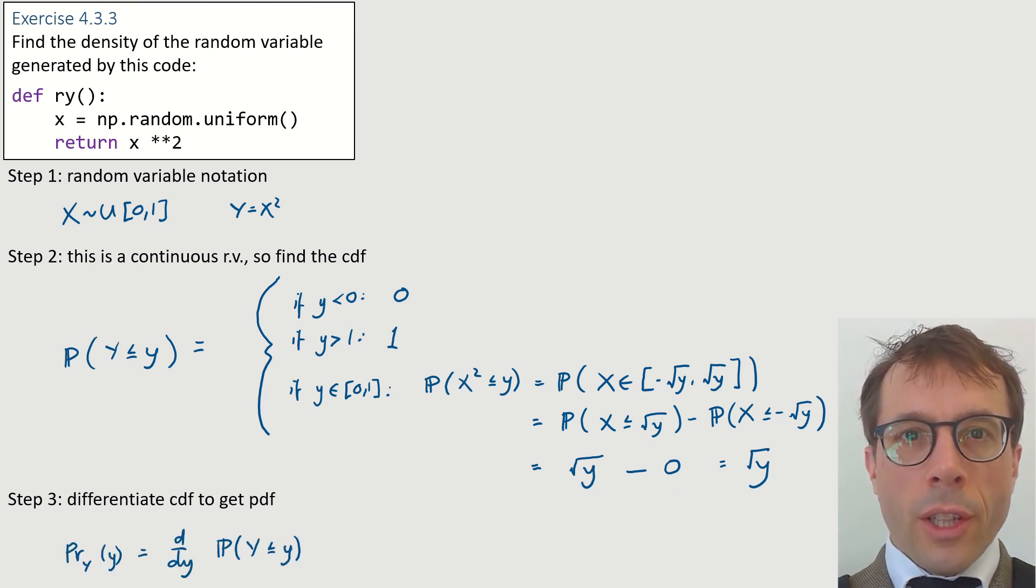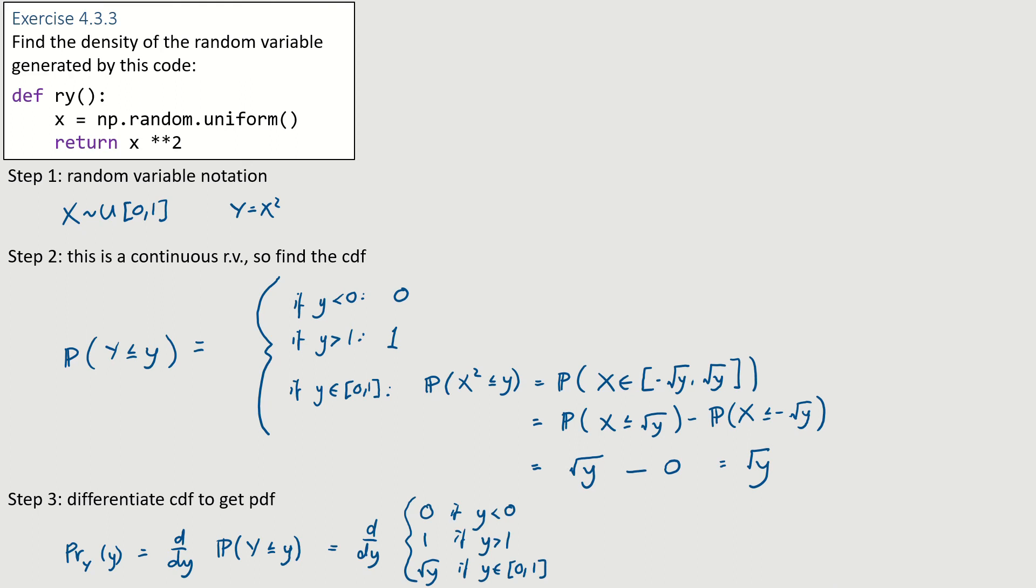Step 3. Differentiate the CDF to get the PDF. And be careful here, because the CDF has three different cases, depending on whether little y is below zero or larger than one or in between. Good. We're done.